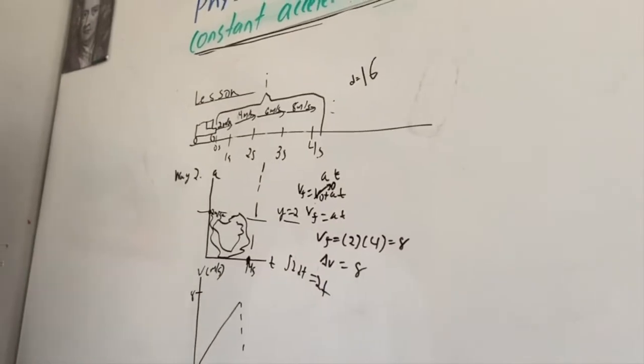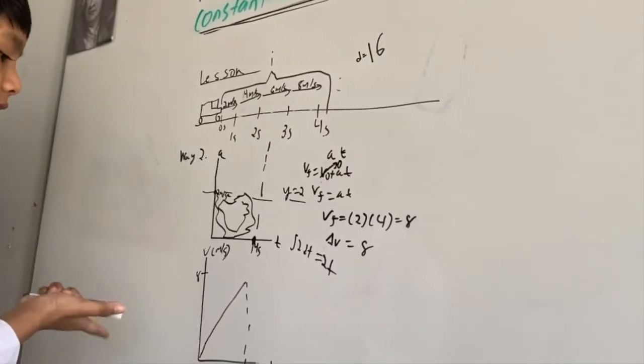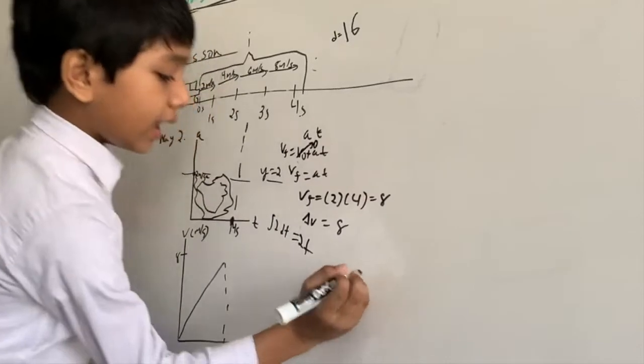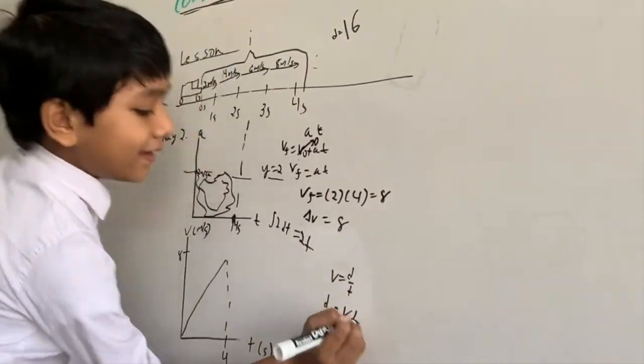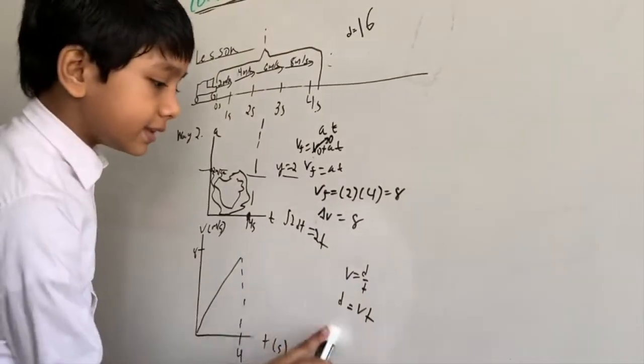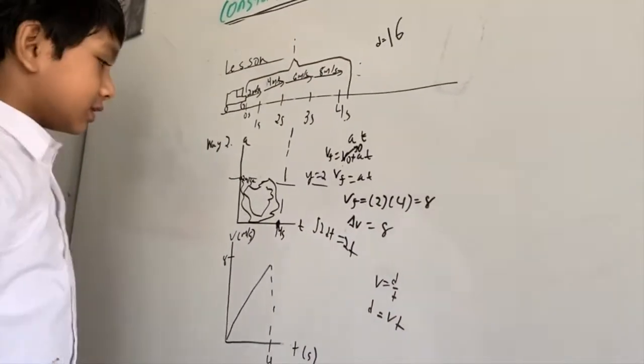But what does this triangle represent? Let's see. What it represents: d = v/t, d = vt. It represents our answer, the distance. We're so close.